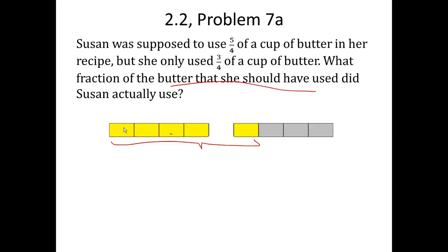if she only used 3 fourths of a cup, that meant she used 1, 2, this isn't working too well, 3. Well, we'll pretend that this is working. Anyway, she used 3 out of the 5. So, our answer is going to be 3 fifths,